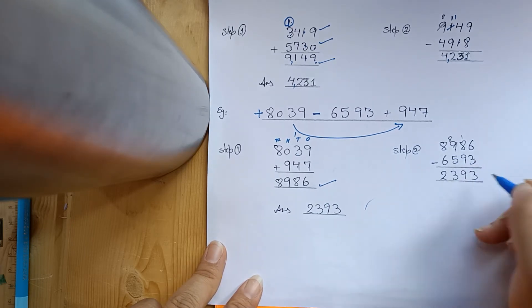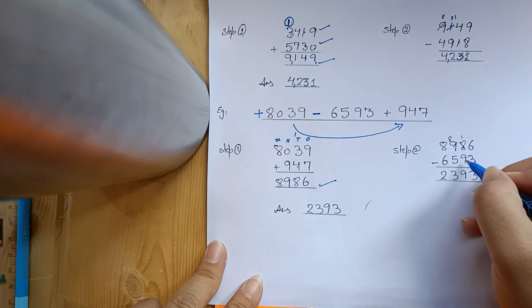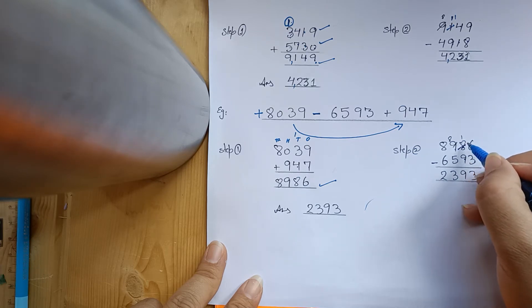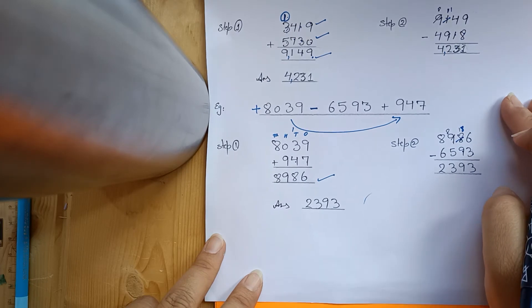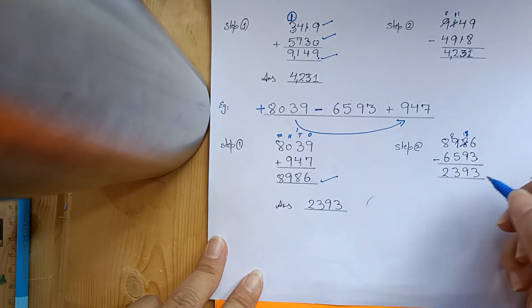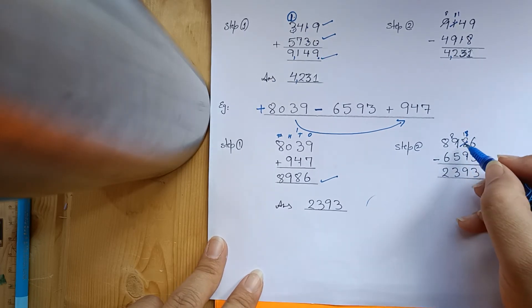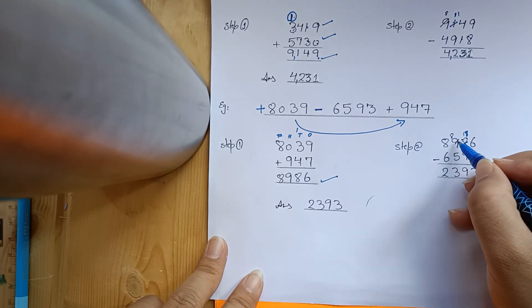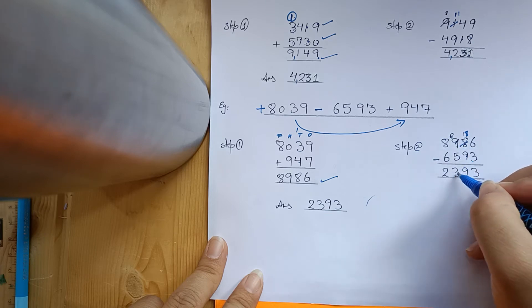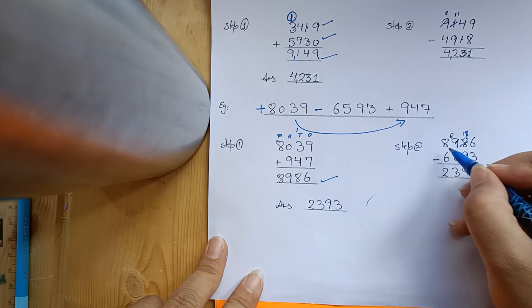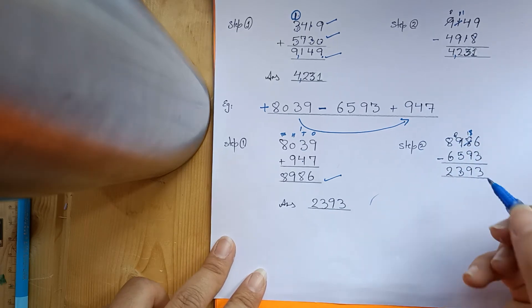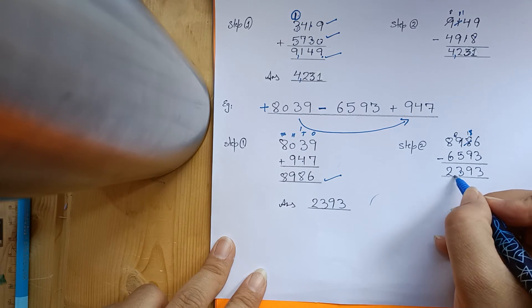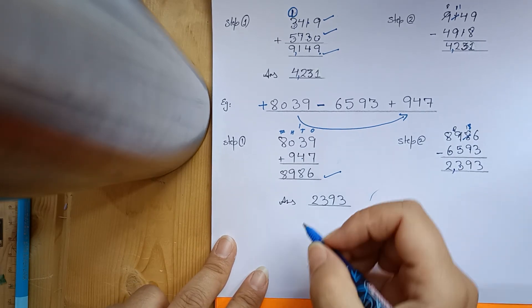6 minus 3 is 3. Here is 8 and 9. We borrow a number, that's 18; 18 minus 9 is 9. Then 9 and 8 — we borrow — 6. Answer is 2,393.